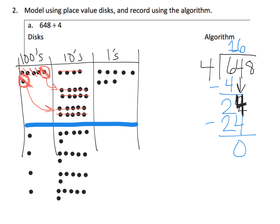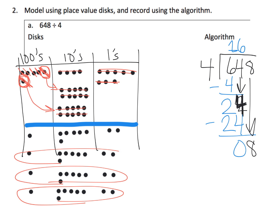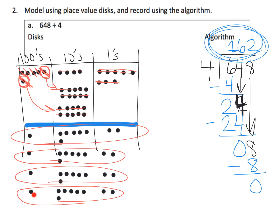We now have 8 ones to divide up into 4 groups — that's why this 8 comes down. 8 ones divided into 4 groups means each group gets 2 dots. We've used up all the dots. In the standard algorithm: 8 dots divided amongst 4 groups means each group gets 2 dots, using all 8 with nothing left over. The answer is 162: 1 hundred, 6 tens, and 2 ones.